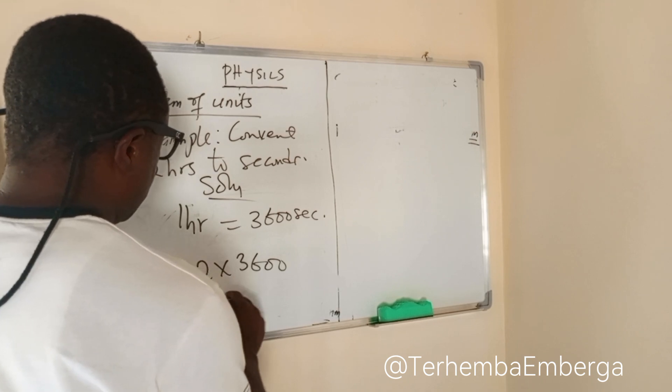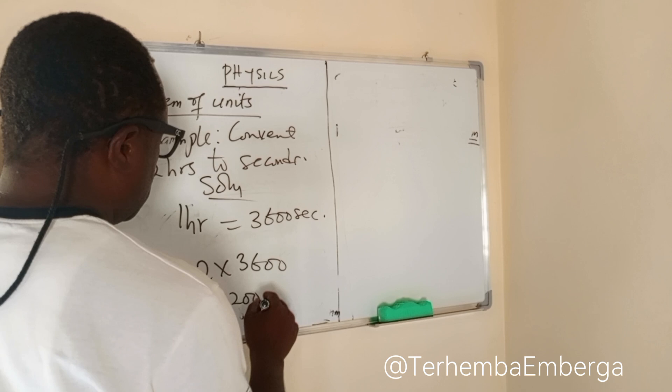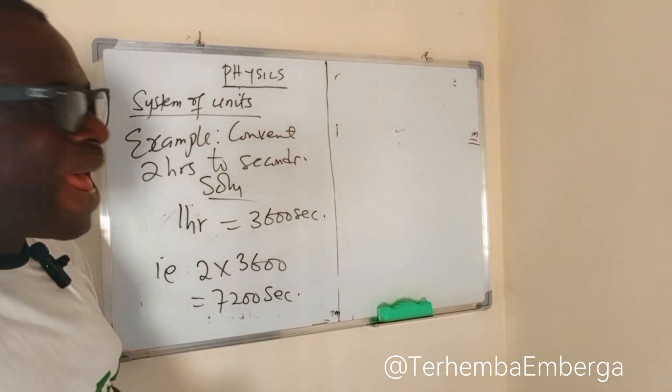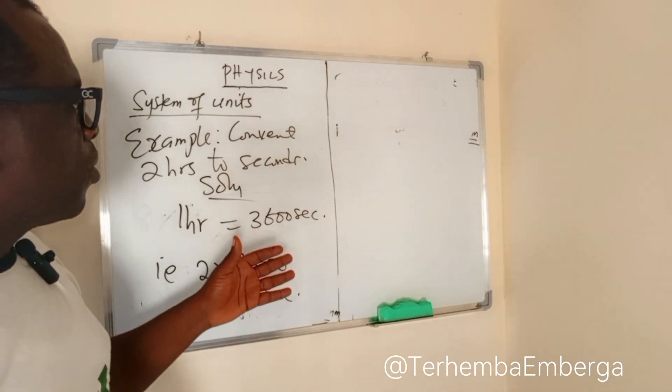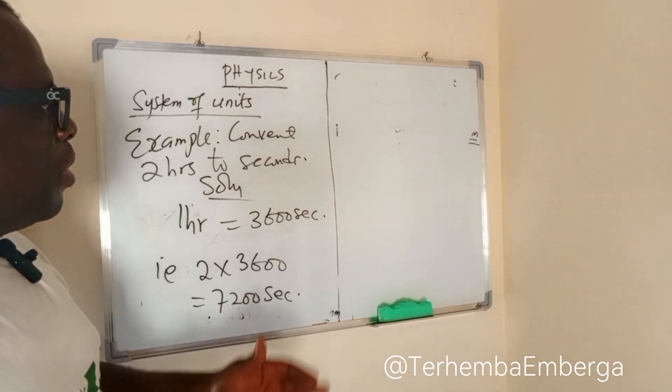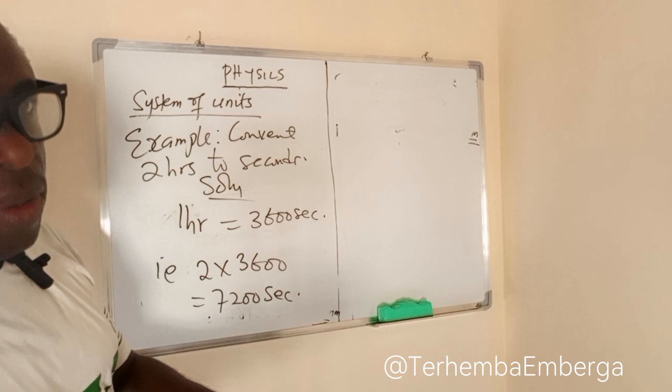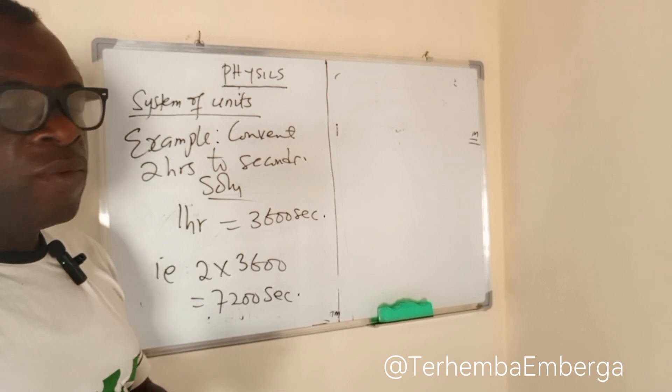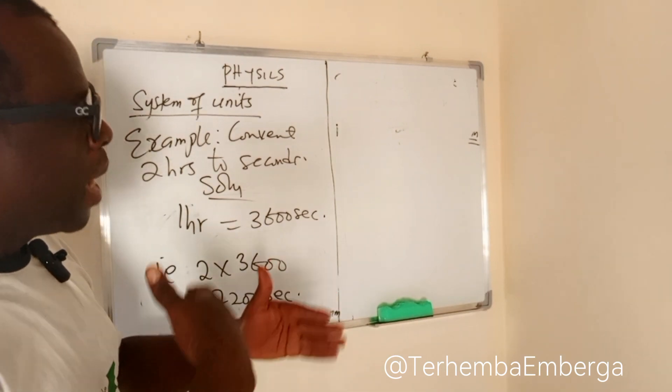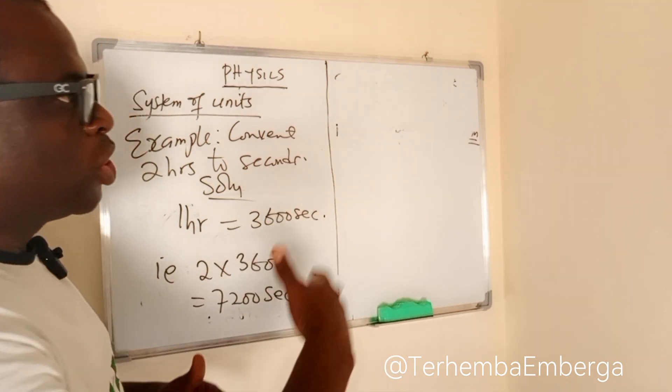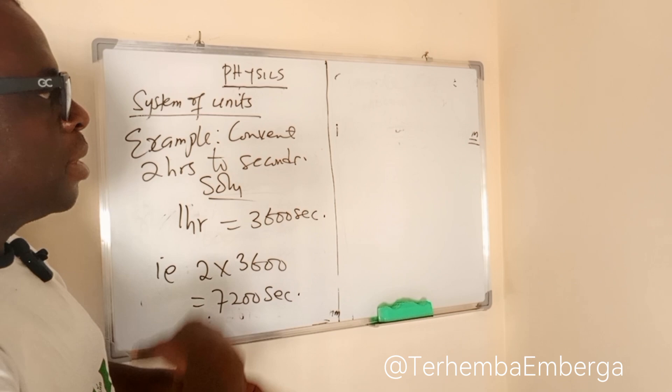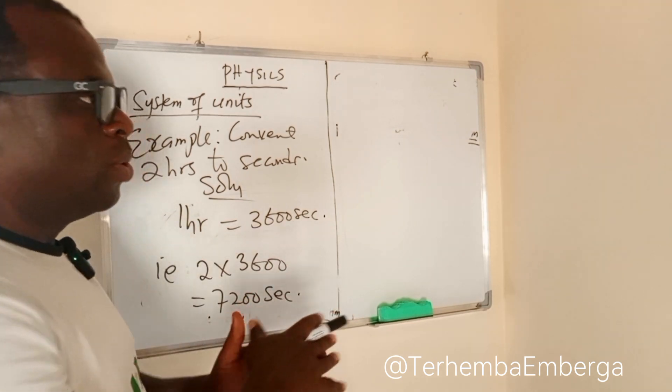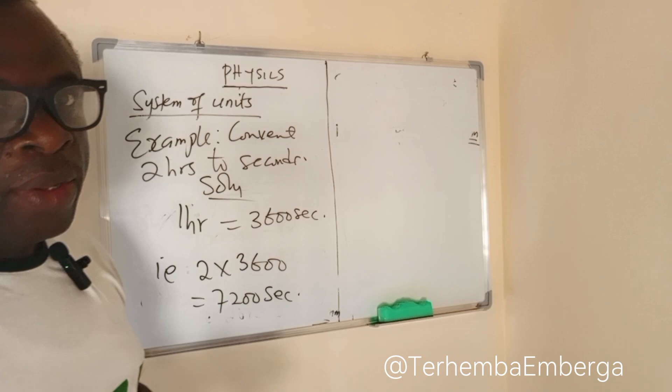The same thing we apply if you are to convert maybe from grams to kilograms or kilogram to grams. You ask yourself, what is the relationship? Am I converting from a big to a small unit? In that case, you multiply. Am I converting from a small to a big unit? You divide by that relationship. Thank you.